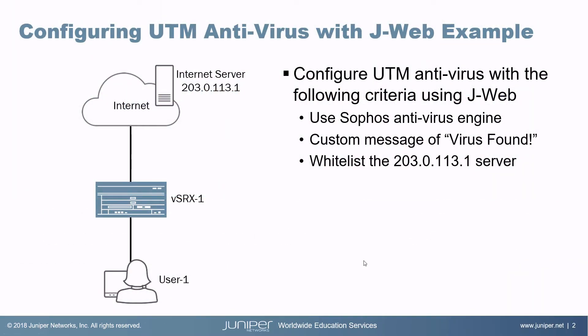Here is our example. We have user1 that is connected to vSRX1, and then vSRX1 connects to the internet. On the internet, there's a server called the internet server that we'll be doing some things with. We want to configure the Sophos antivirus engine and configure antivirus protection. If there's a virus found, we want to specify a custom message that says 'virus found!'. However, we want to whitelist the internet server. So let's jump to the J-Web interface for vSRX1 and set this up.